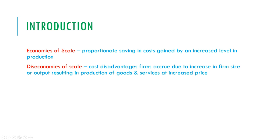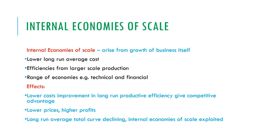So, what is economies of scale? Economies of scale is a proportionate saving in costs which is gained by an increased level of production. Diseconomies of scale, however, is when cost disadvantages that firms accrue due to an increase in the firm's size or output result in production of goods or services at an increased price. Essentially, economies of scale means the more you buy, the lower the price. Diseconomies of scale is the disadvantage of costs accrued due to your firm being larger, resulting in production of goods at an increased price.